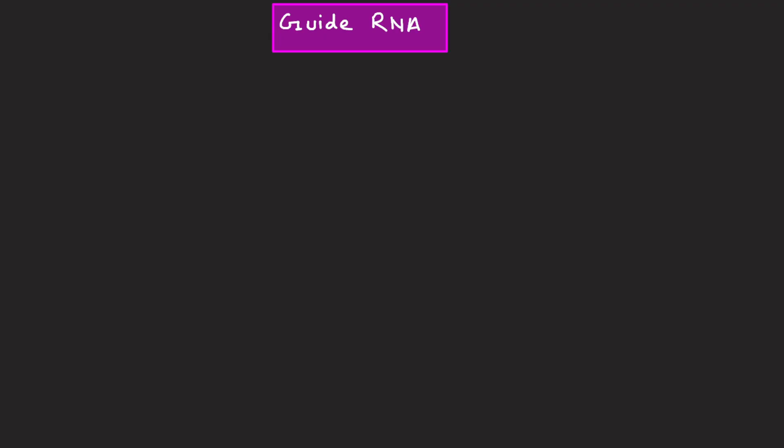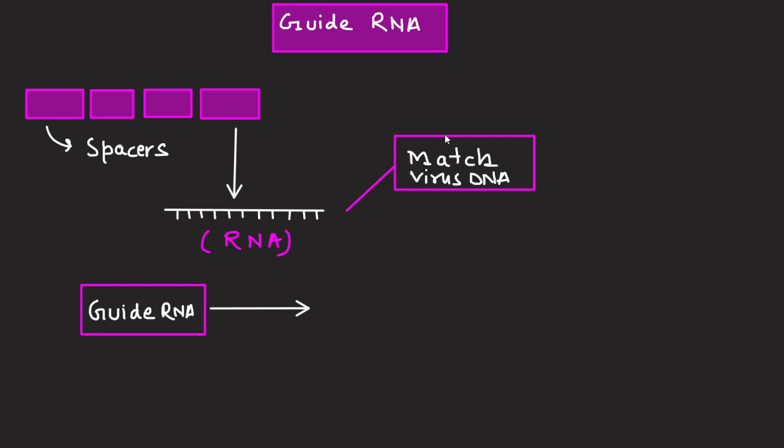What is guide RNA? From the CRISPR memory bank, which are spacers, the bacteria create small pieces of RNA molecules that match the DNA of the invading virus. These are called guide RNA molecules because they guide Cas9 to the exact target. Think of this like a search command in your browser. You paste a specific word or sequence in the search bar and it highlights the matching text on the page.